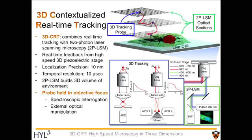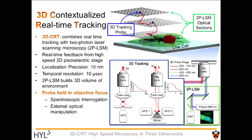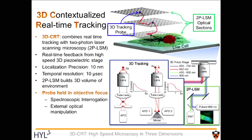3DCRT breaks the 3D time barrier by focusing on a single probe of interest, allowing previously unreachable microsecond timescales. The probe is held in the objective focus using real-time feedback in a high-speed 3D piezoelectric stage. This real-time tracking allows sub-diffraction localization precision down to 10 nanometers with 10 microsecond time resolution.